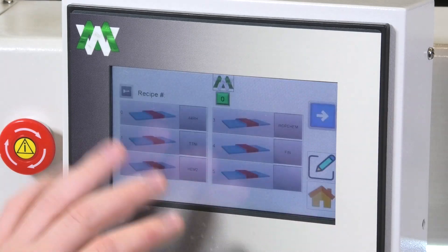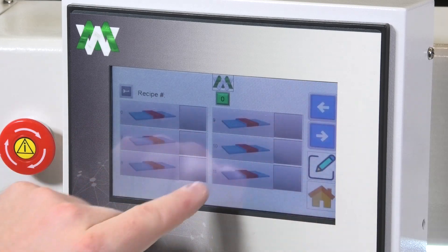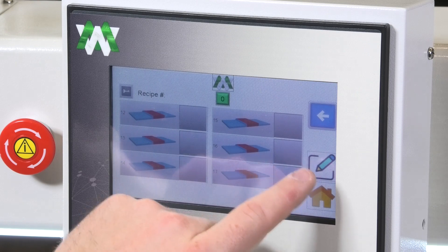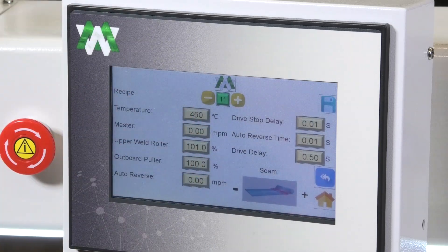Clicking the paper folder button will showcase the recipe page. From there you can save and choose the seams that you want to weld. Click the pencil button to go in and input the desired parameters for each of your recipes.